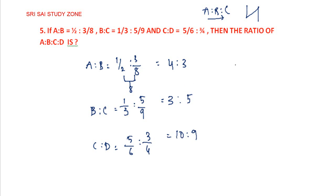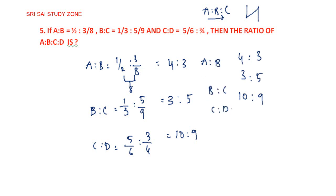The N values are A, B, C, D. We have A to B is 4 to 3, B to C is 3 to 5, C to D is 10 to 9. We need to find a common value for B and C. B into B into C: 3 times 3 is 9, 9 times 10 is 90. The C value: 3 times 5 is 15, 15 times 10 is 150.